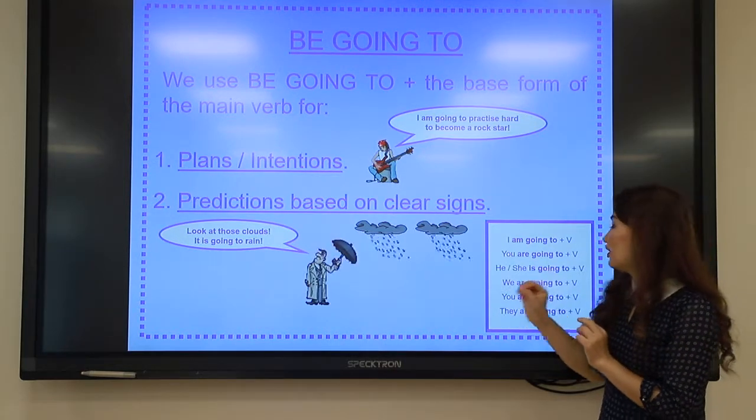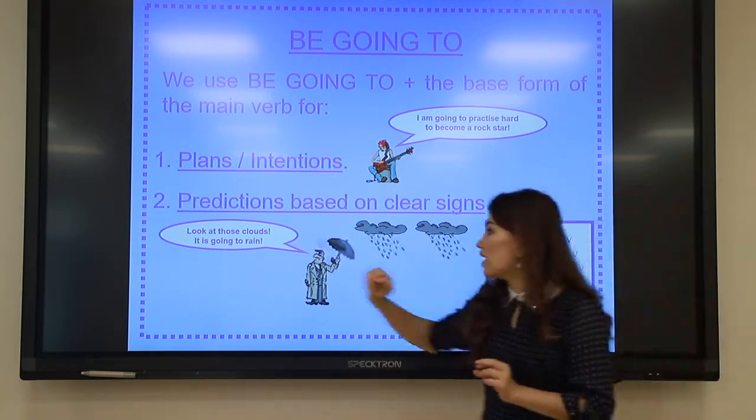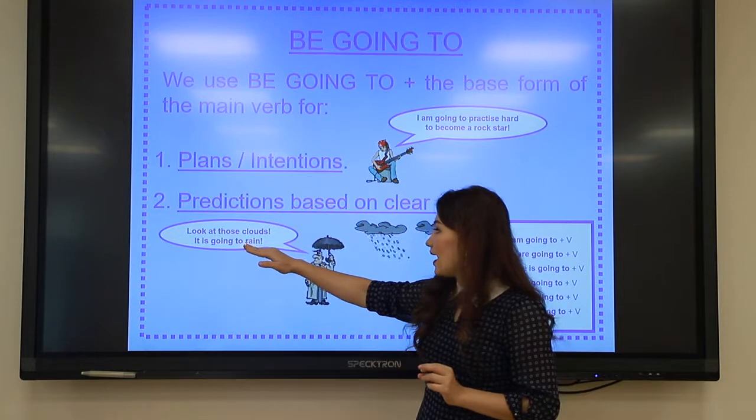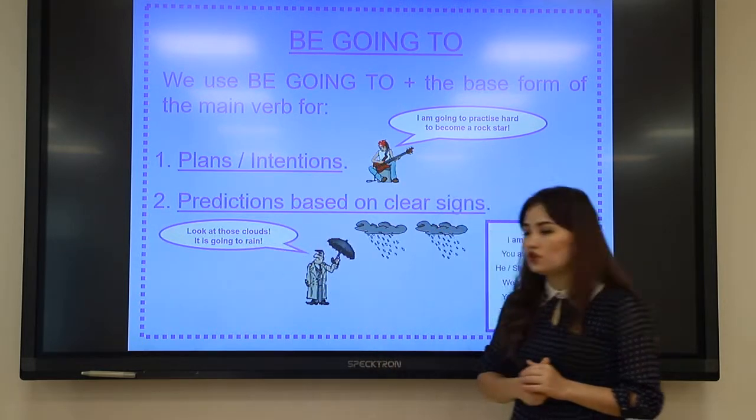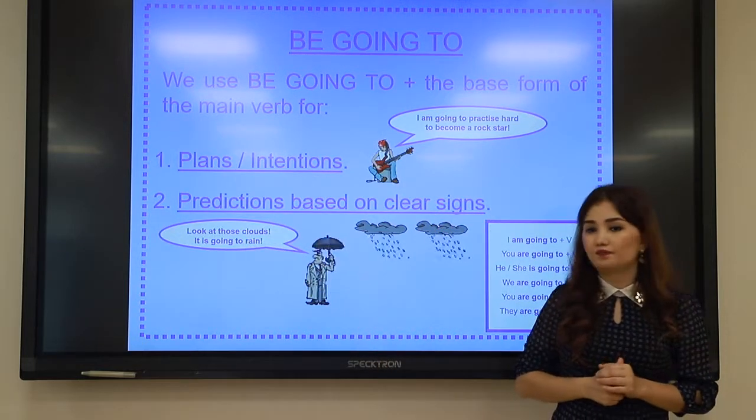For example: Look at those clouds, it's going to rain. This is a prediction based on visible evidence — the clouds — so we use 'to be going to.'